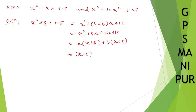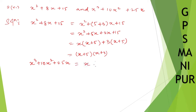So the first polynomial factors as (x plus 5)(x plus 3). Now for the second polynomial: x cubed plus 10x squared plus 25x. First, take x common, leaving x squared plus 10x plus 25.